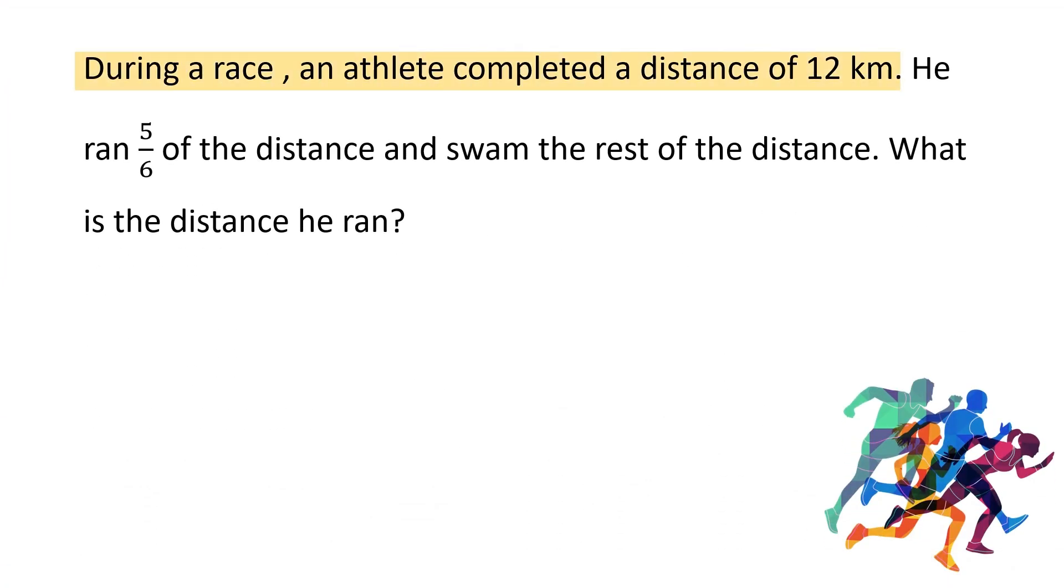During a race, an athlete completed a distance of 12 kilometers. He ran 5 by 6 of the distance and swam the rest of the distance. What is the distance he ran? So, we know that during a race, an athlete has covered a total of 12 kilometer distance. Out of which he has ran 5 by 6 of the distance. So, let's find out what is 5 by 6 of 12.